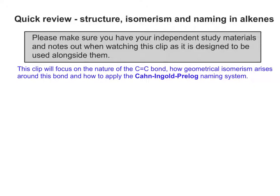Hi and welcome to this quick review of the structure, isomerism and naming of alkenes. Please make sure you've got your independent study materials and your notes to use alongside this clip. We'll look at the nature of the carbon-carbon double bond, how geometrical isomerism arises around this bond, and how we can apply the Cahn-Ingold-Prelog naming system in alkenes.